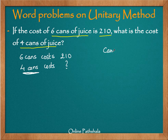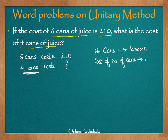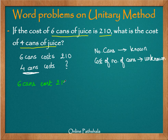The number of cans is a known quantity — we know that there are four cans — but the cost of those cans is an unknown quantity. So now let us use the unitary method to calculate the cost of four cans of juice. From this statement: six cans cost 210.